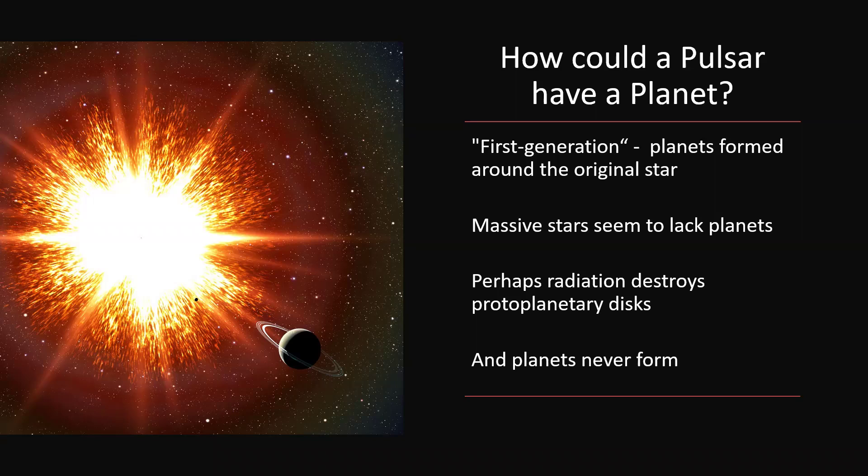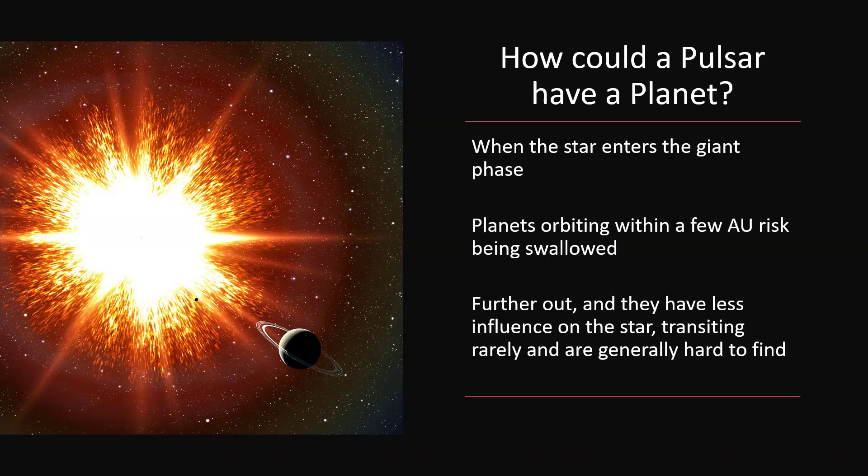This is made a little bit more difficult for us because we don't seem to be finding planets around massive stars. Now it could be that the early days of a massive star see such a large amount of radiation, solar winds and so on, pouring off the star that the disc of gas and dust, the proto-planetary disc out of which the planets could potentially condense, never gets a chance and is blown away.